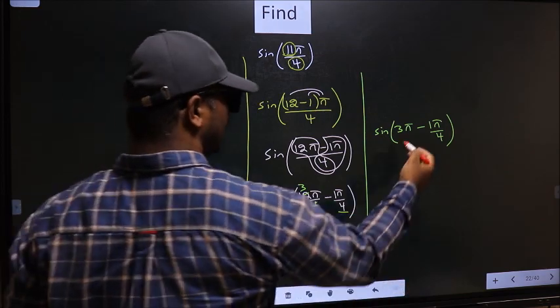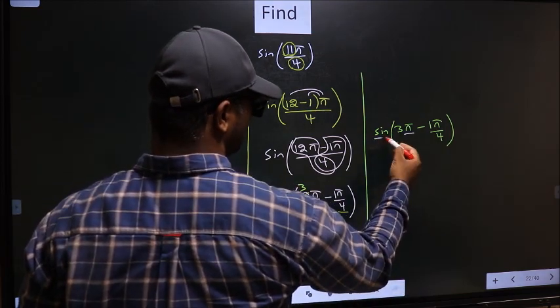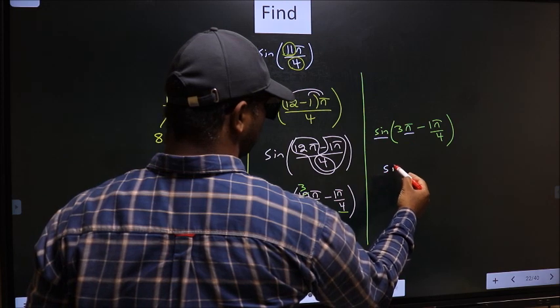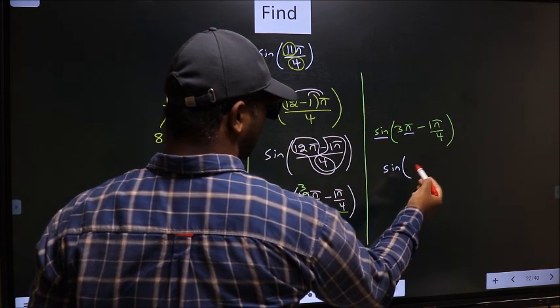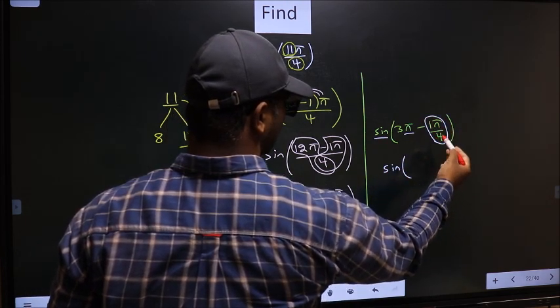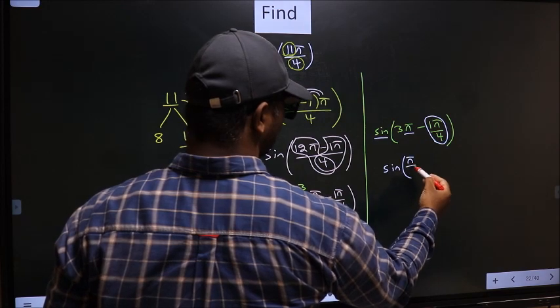Next. Here we have π. So, sine is not going to change. It will remain sine. And inside we get this angle, π by 4.